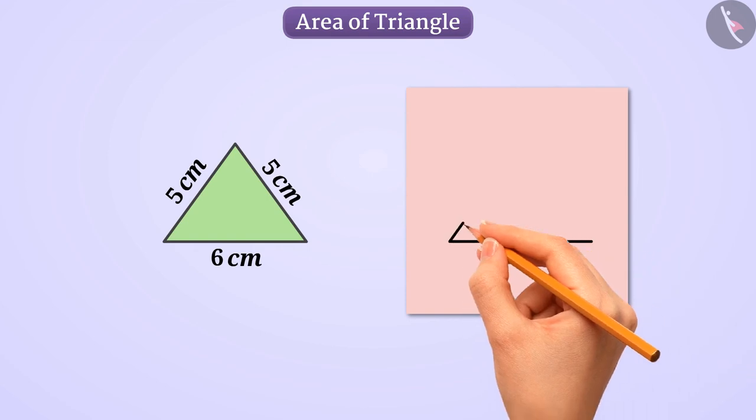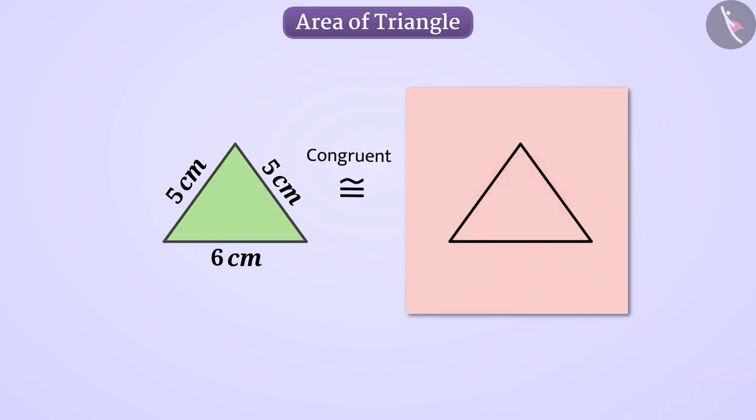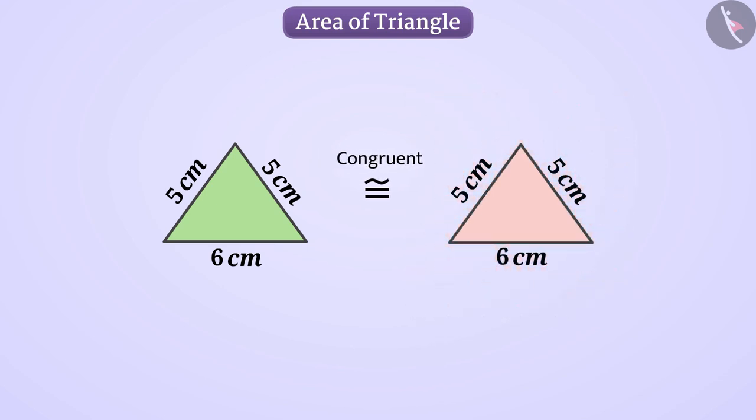Draw a triangle on paper which is congruent to this triangle. That is, draw another triangle whose sides are of length 5 cm, 5 cm, and 6 cm. Cut this as well.